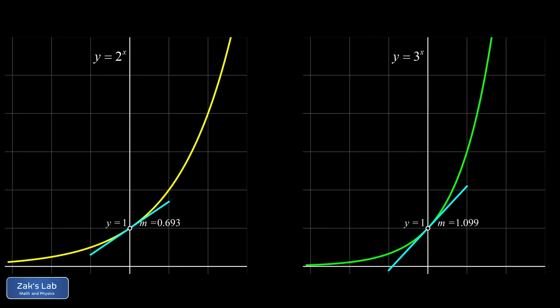So here we're checking out the exponential function 2 to the x on the left and 3 to the x on the right. And we're investigating the slopes to see what's going on here. So at y equals 1, we see that the slope of 2 to the x is a little bit less than 1. It's 0.693. And the slope of 3 to the x, that's a little bigger than 1. It's 1.099.